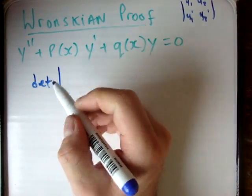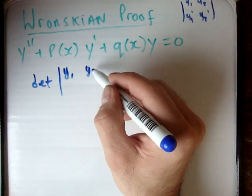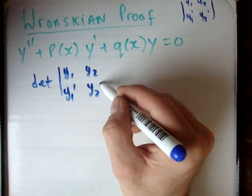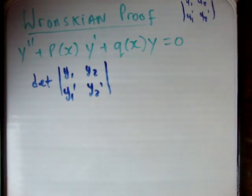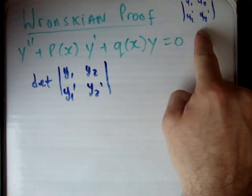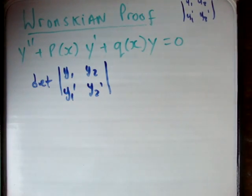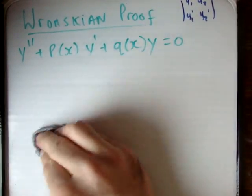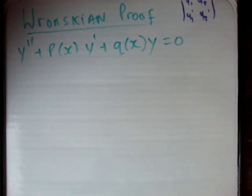The determinant of the matrix is y1, y2, y1 prime, y2 prime. I've just written my matrix up here in the corner, and we need to calculate this determinant. So let's go ahead and prove basically how the Wronskian works.